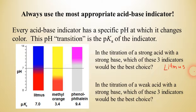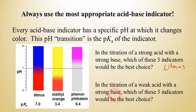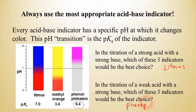For the titration of a weak acid with a strong base, the base will win out, so we expect the pH at the equivalence point to be a little above 7 — maybe around 9. Phenolphthalein, with a pKa close to 9.4, is the best choice for this type of titration.